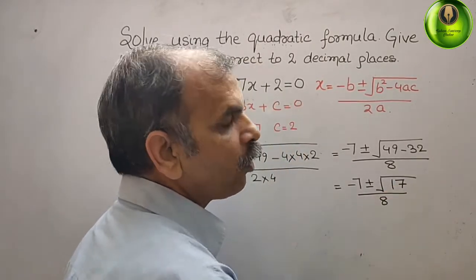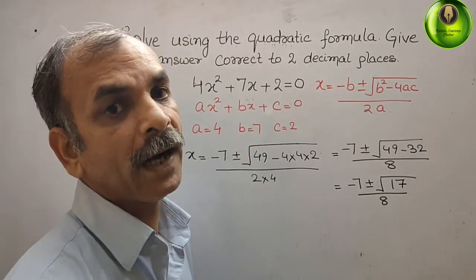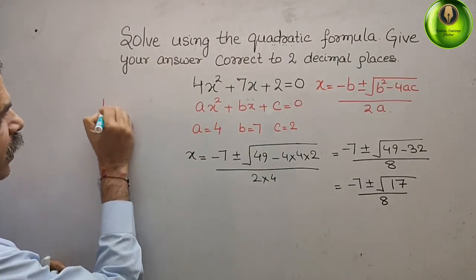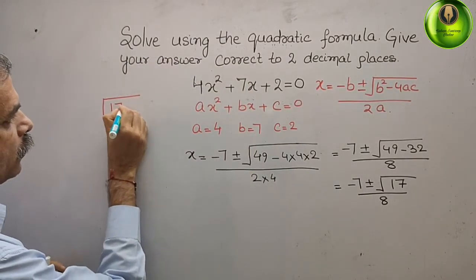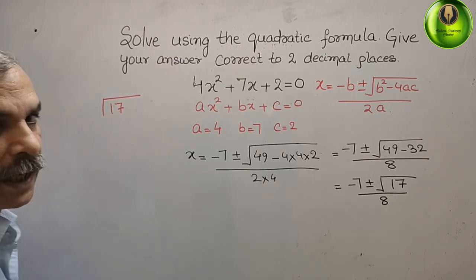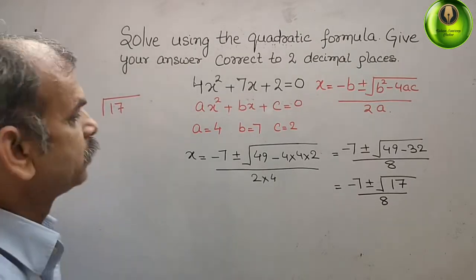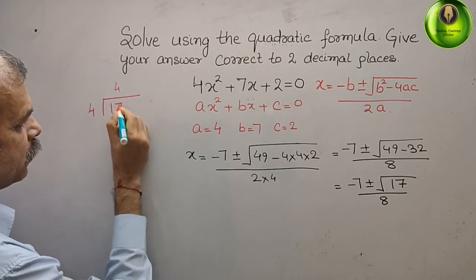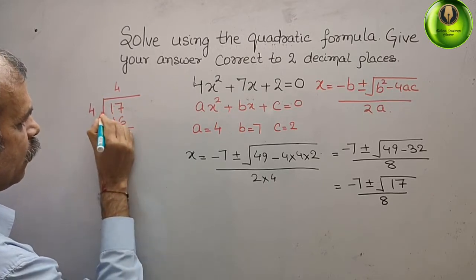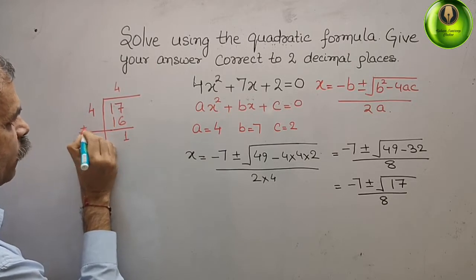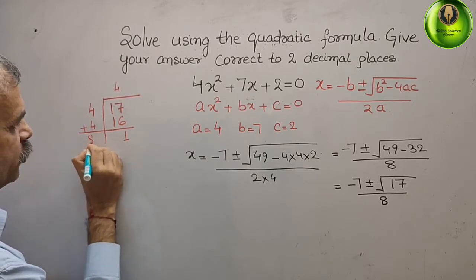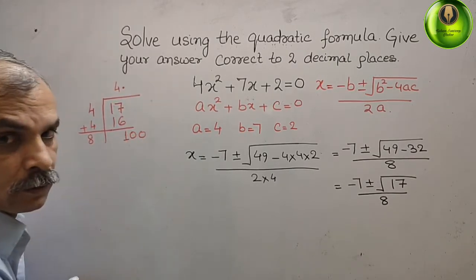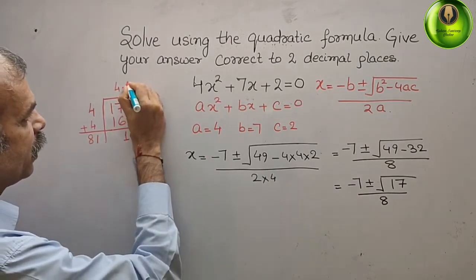Now we will find out the value of √17 by long division method. So what is that? 17, that means how much time it will go in perfect square? 4 times 4 here, 4 you can write here 16, then 1 is there. Now add 4, what we have written last, that it gives you 8. Then we will put a point here and you will get 2 zeros, then 1 time here it will come 1.